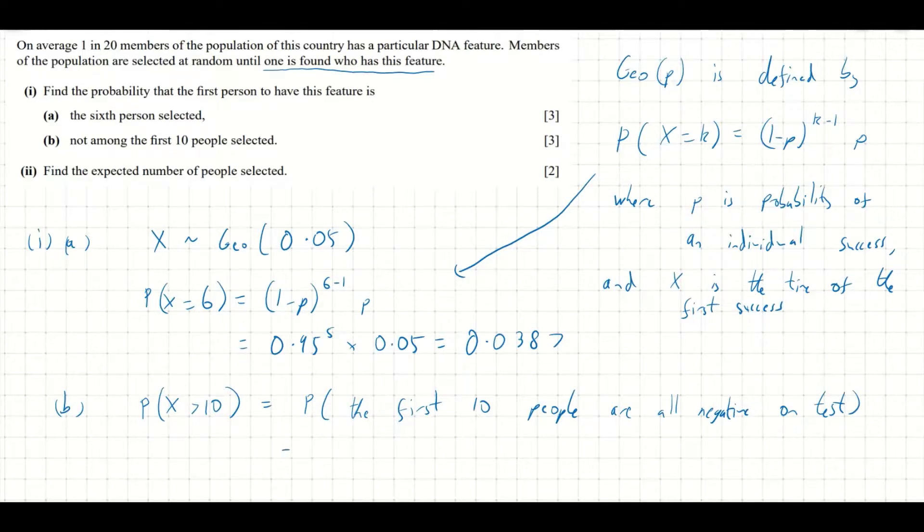So the probability that the first 10 people, they're independent people, so the probability the first 10 people are all negative, it's just 0.95 to the power of 10. This is just using the Bernoulli distribution. And that is 0.599 to three significant figures.